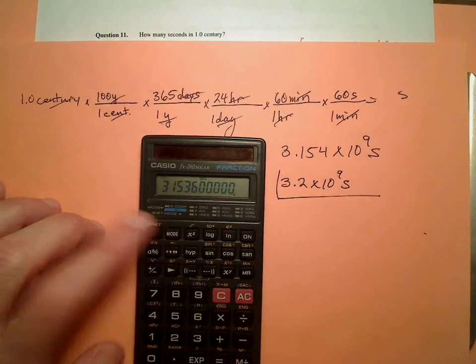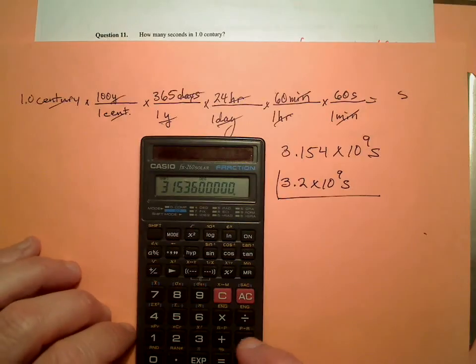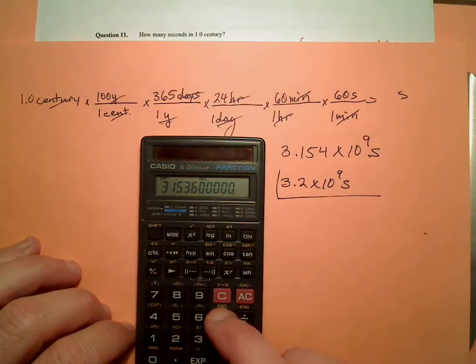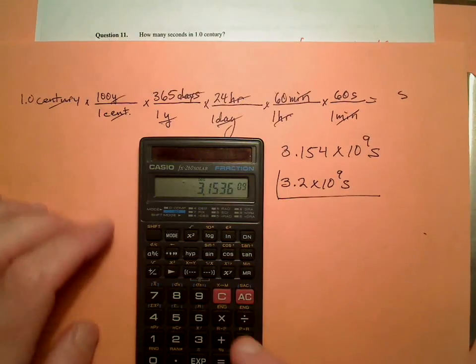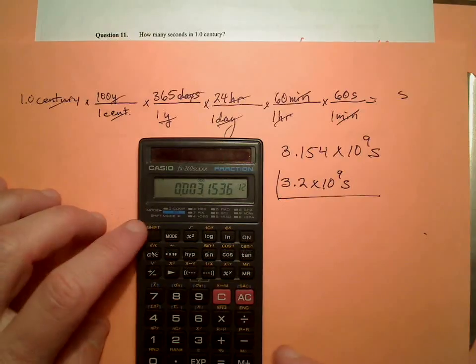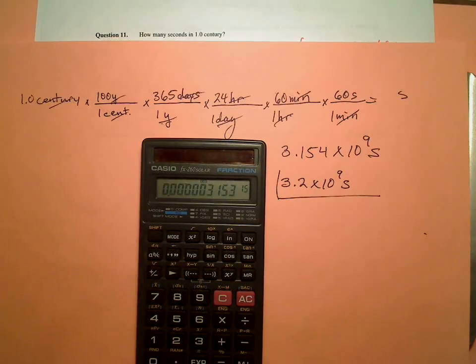We can put our calculator in scientific notation mode. Let's see. Can I do it? Where is it on this calculator? Engineering. See, now it's going to be 2. So there it is. We just need 2 sig figs. Alrighty. There you have it.